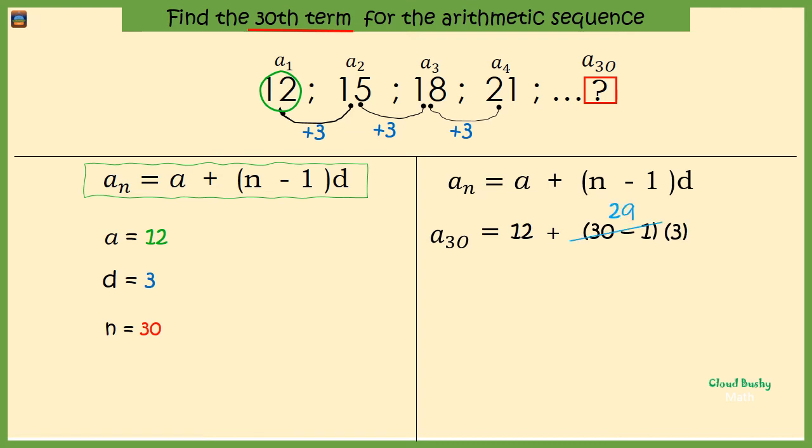30 minus 1 is 29, so we have 12 plus 29 times 3. 29 times 3 is 87. That implies that the thirtieth term, that is the term at position 30 in the sequence, is 12 plus 87, that is 99.